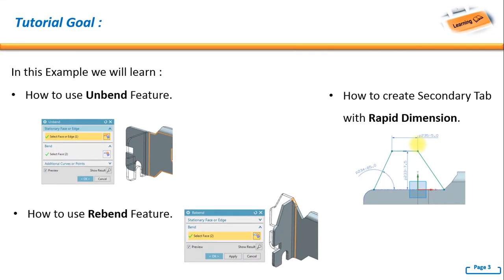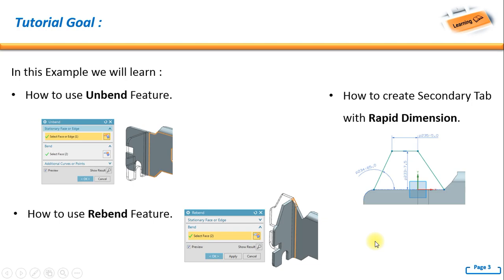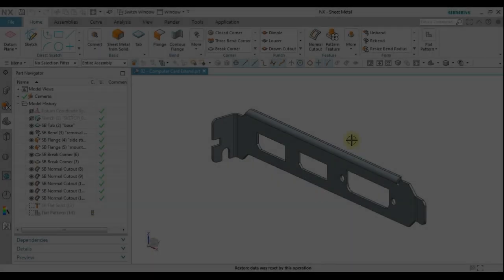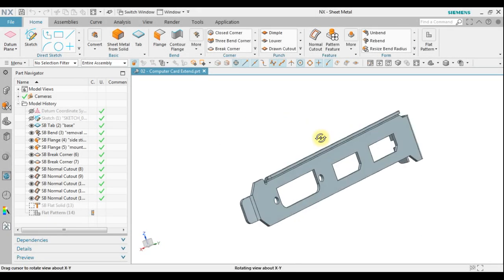For this tutorial, we will learn three things: first, how to use the unbend feature — for example, if you already have a bent corner, you can simply unbend it to make it flat again. Second, we will learn how to create a secondary tab using rapid dimension. Finally, we will learn how to use the bend feature to make it bent again.